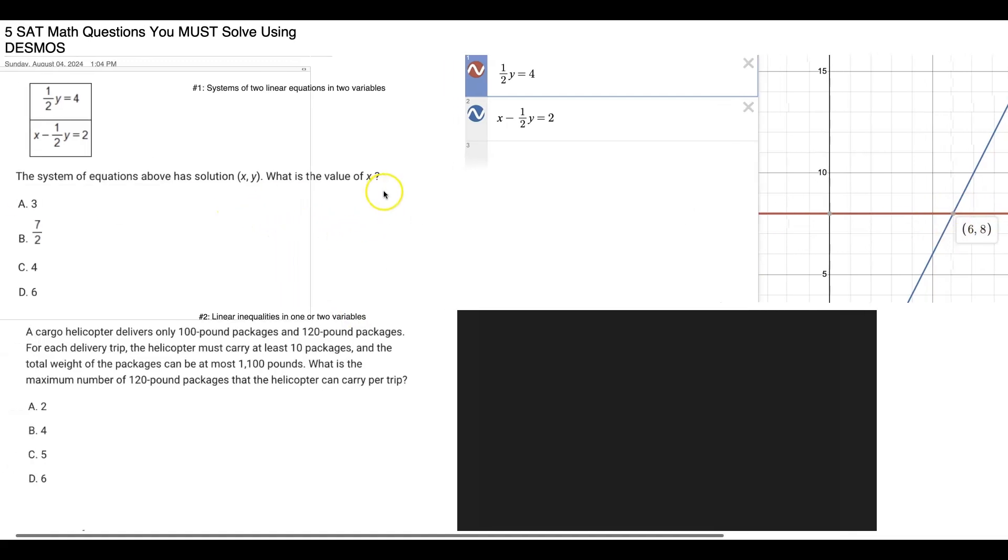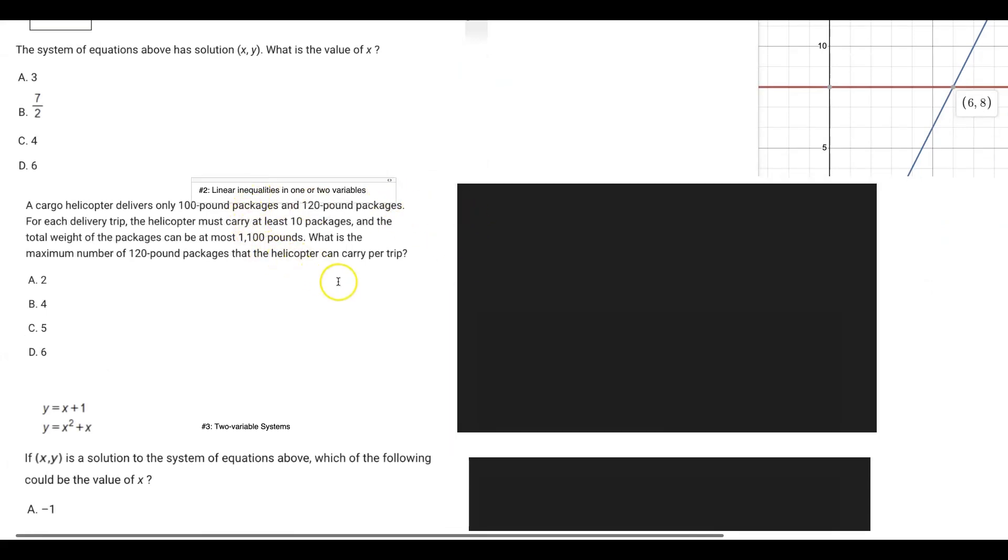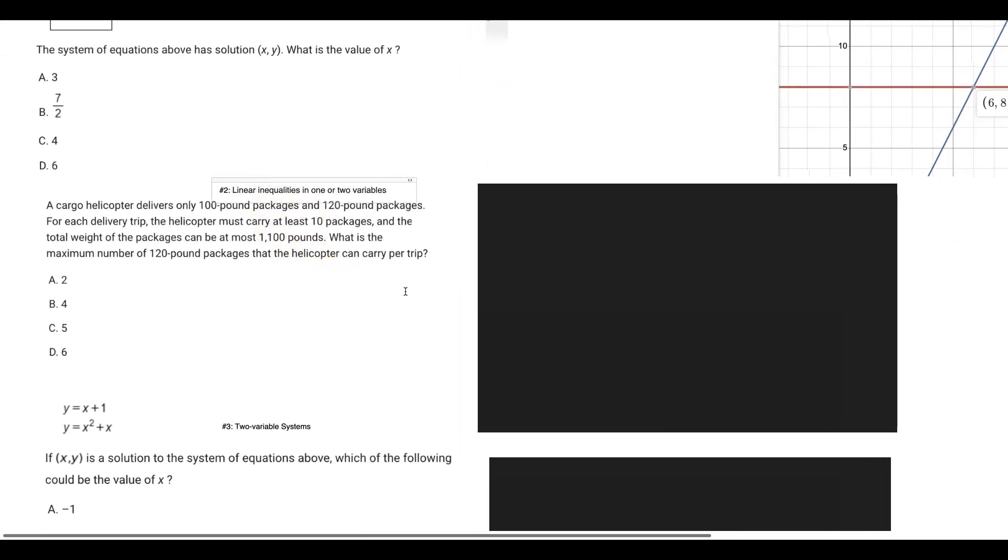Moving on to the second type of problem, that's going to be linear inequalities in either one or two variables. This can be just straight up the inequality, or it could be a word problem. You can see here we have a word problem.